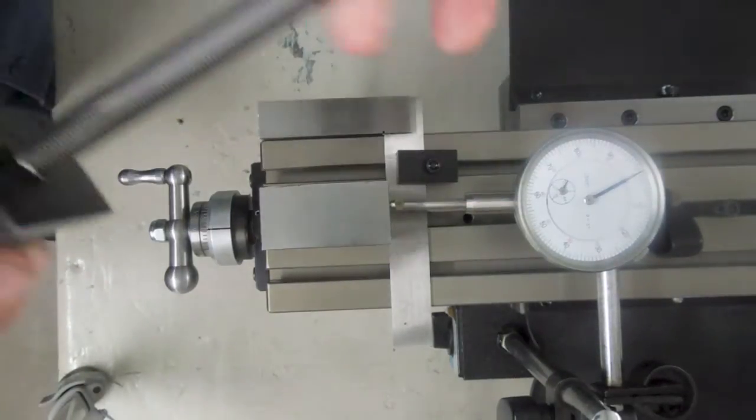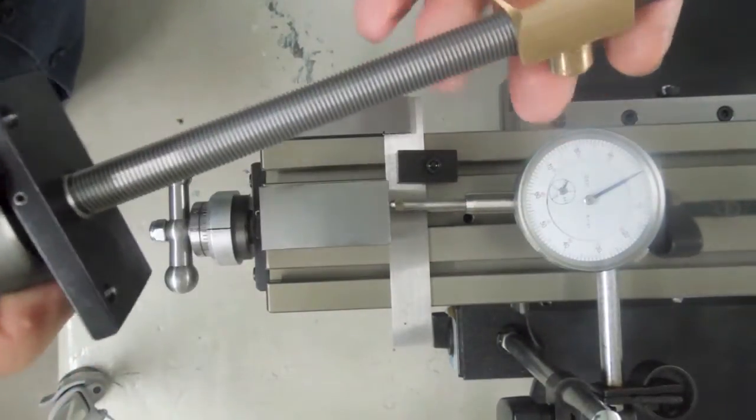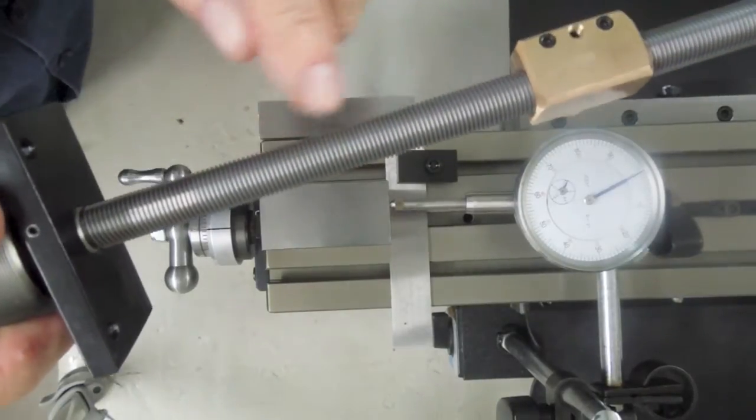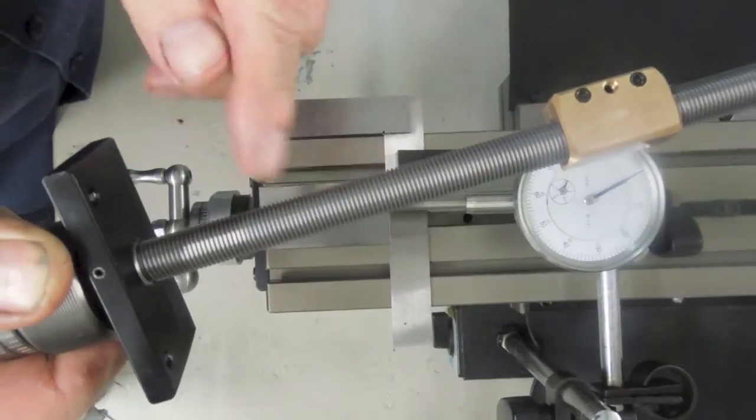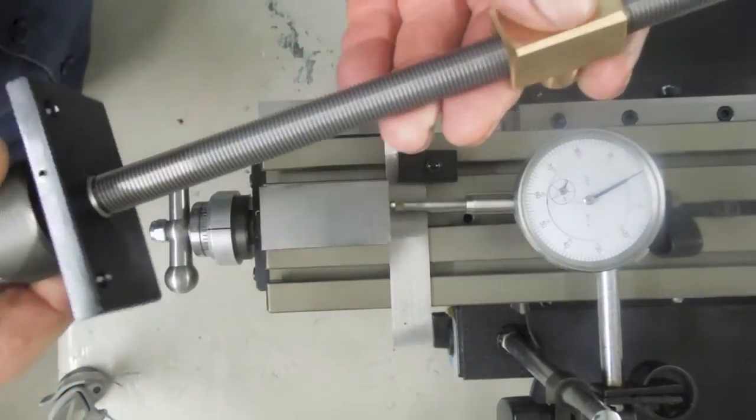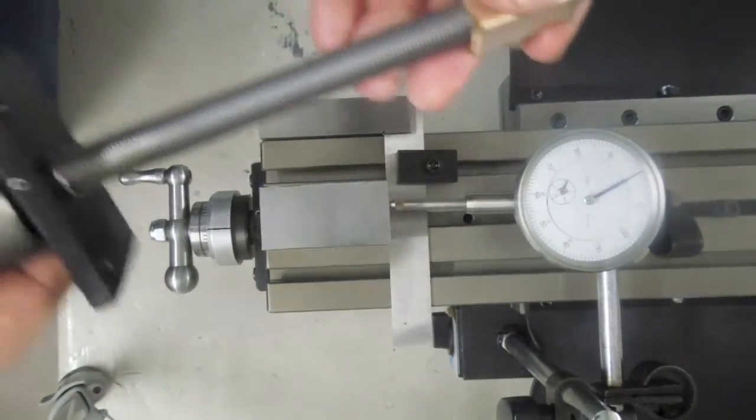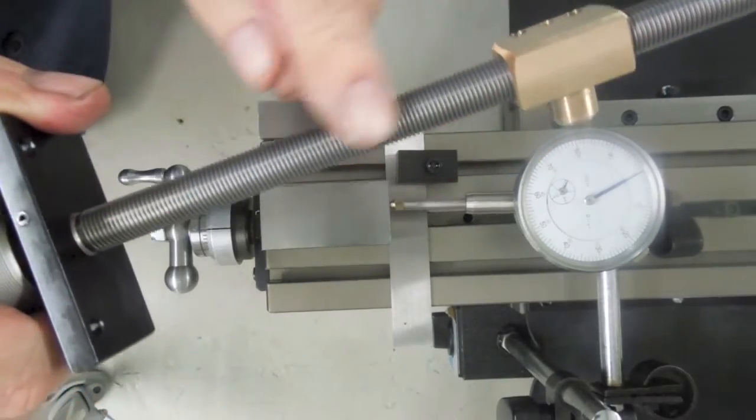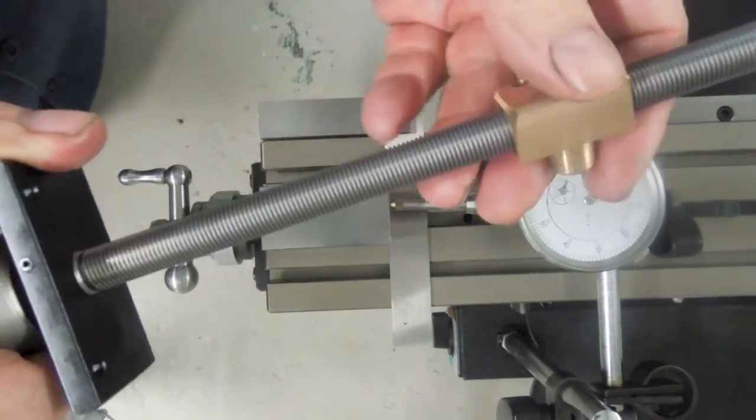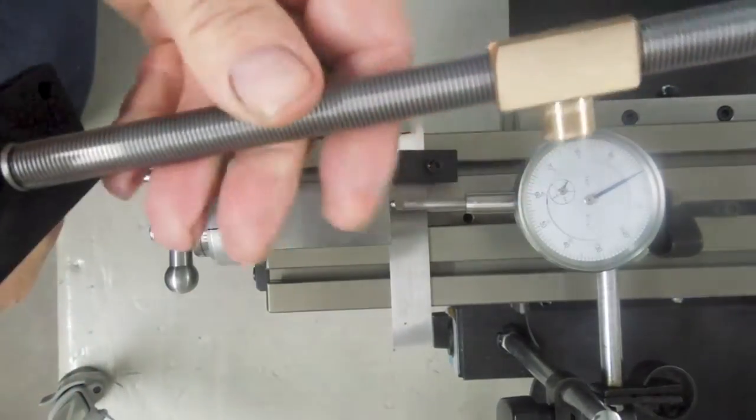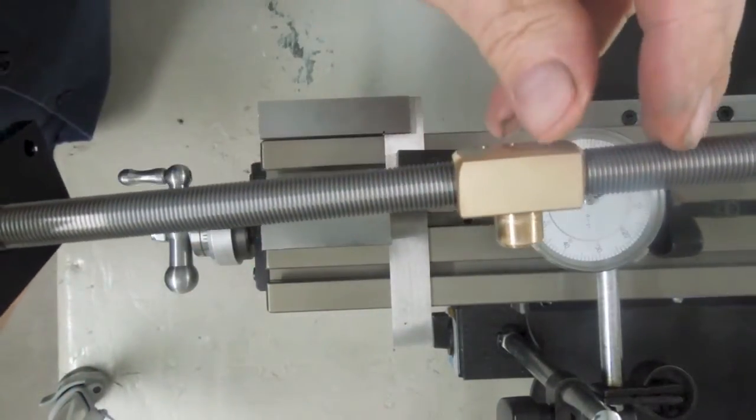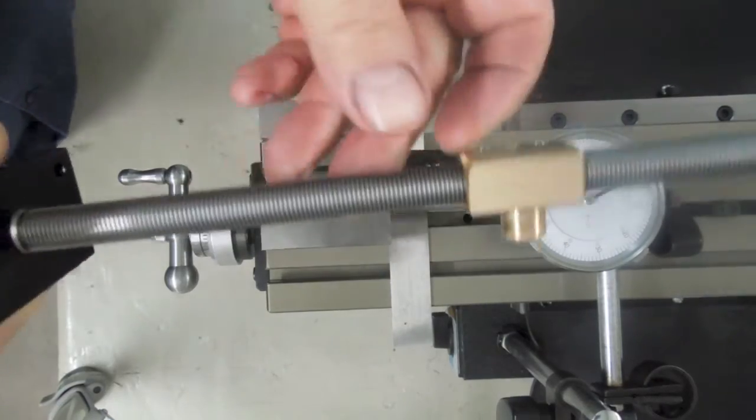Now the reason we have backlash is this. Here's one of our screws. This screw is one-half by 20, meaning it's a half inch round and it has 20 threads per inch. So if we divide 1 by 20, we get 0.05, which is 50 thousandths. So that means each rotation of this screw, this nut will move 50 thousandths in one direction or the other.